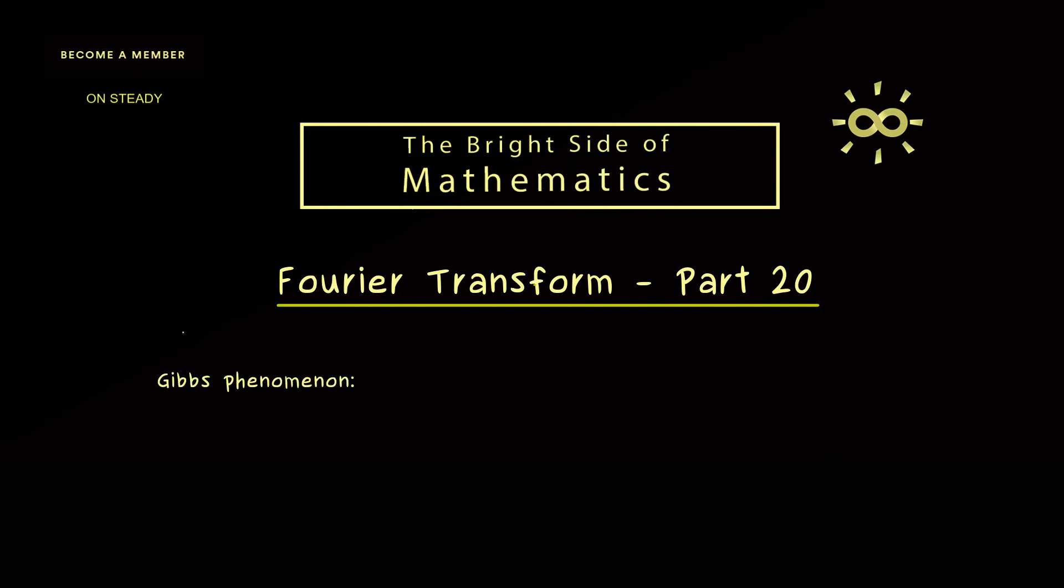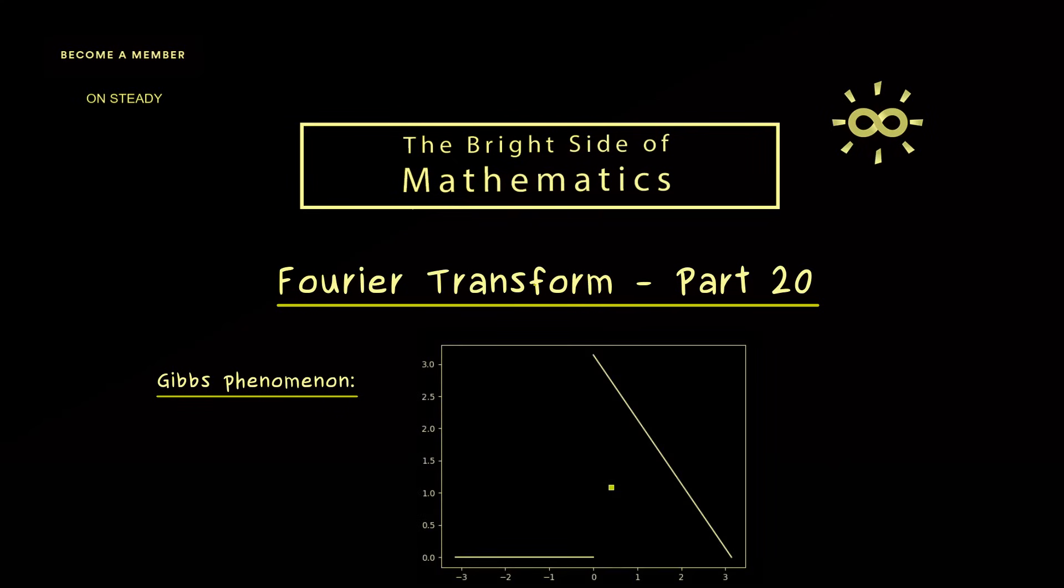Alright, then let's get straight to the topic of today, which is Gibbs Phenomenon. As already mentioned, this is something that only occurs at jump points, so we have to consider a non-continuous function. This function we already saw in part 17, and we already know the Fourier series converges pointwise except at the jump point.